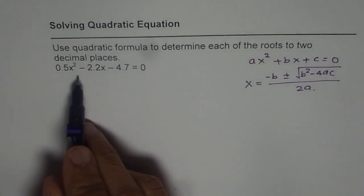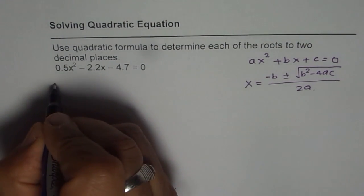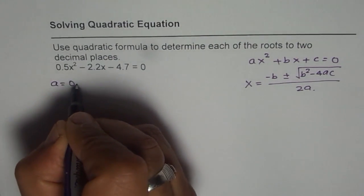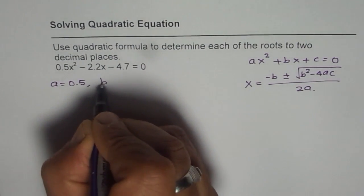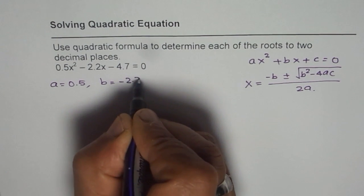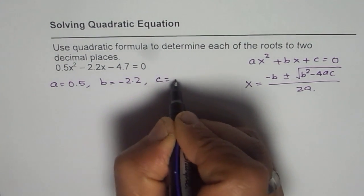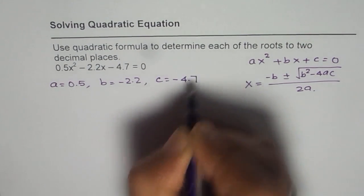If you compare the given equation with the standard equation, you can say a equals 0.5, b equals -2.2, and c equals -4.7.